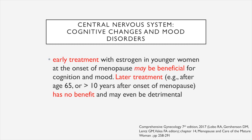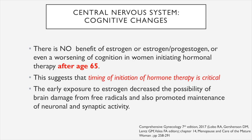For both cognitive changes and mood disorders, early treatment with estrogen in younger women at the onset of menopause may be beneficial for cognition and mood. Later treatment — meaning treatment at age 65 or more than 10 years after onset of menopause — has no benefit and may even be detrimental. There is no benefit, or even a worsening of condition, in women initiating hormonal therapy after age 65. This suggests the timing of initiation of hormonal therapy is very important. Early exposure to estrogen decreases the possibility of brain damage from free radicals and promotes maintenance of neuronal and synaptic activity.